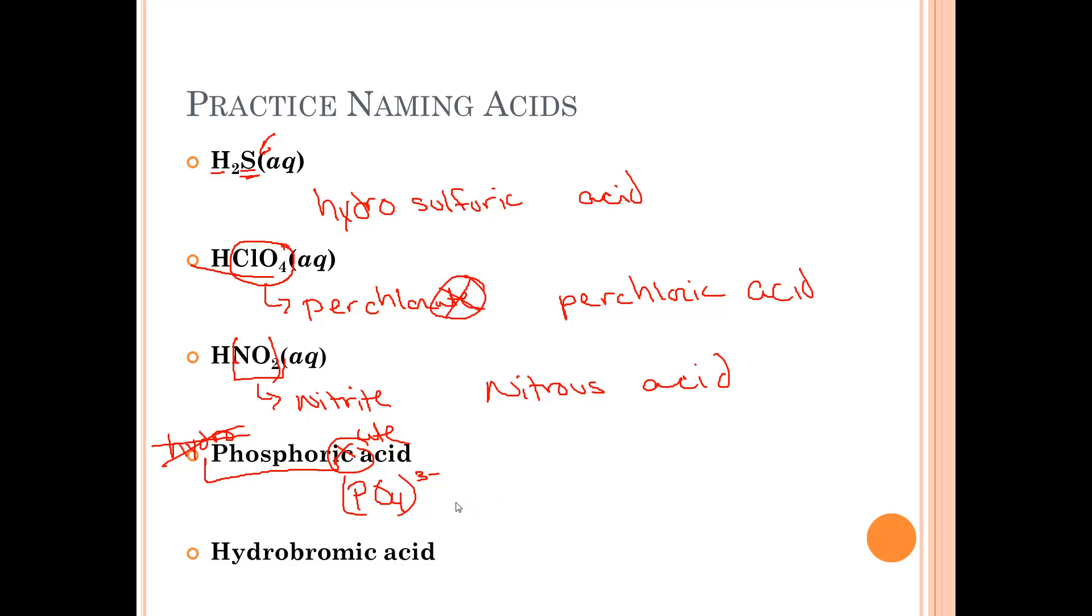And the last one, hydrobromic. Notice it begins with hydro. That means it's just the element itself, bromine. Negative one, positive one, becomes HBr. And that's how to name molecular compounds and acids.